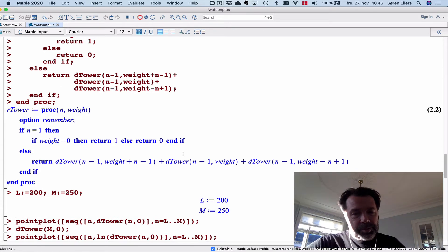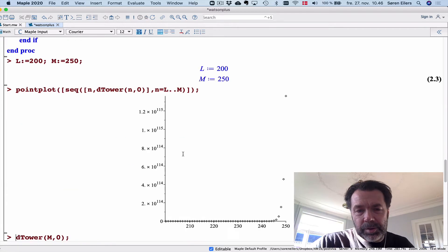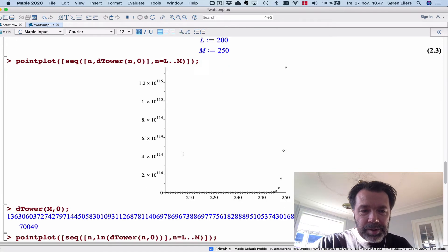Let's see what we can do with this. I'm going to compute the numbers between 200 and 250. This is going to take a little while, but there you have it. These are the pure numbers. Just to impress you a little bit, the last number I computed was dTower 250.0, and you can see that's a pretty big number, probably something with 115-ish digits.